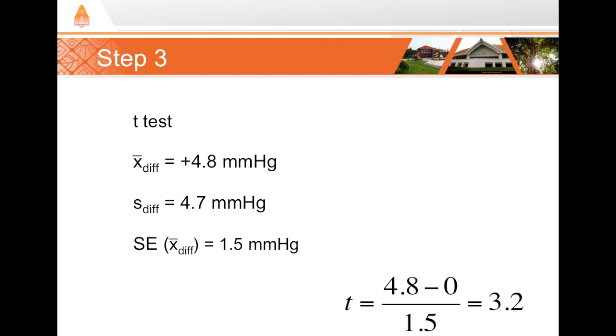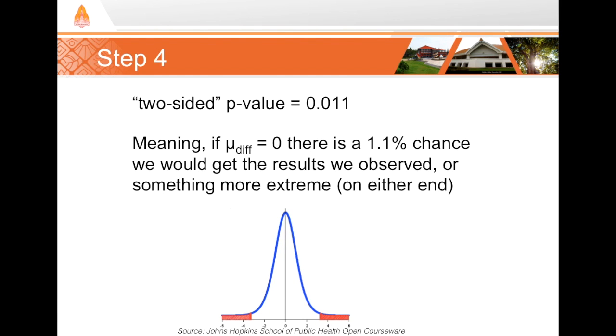Finally, we take that t-statistic and plug those values into our two-sided two-sample dependent t-test, and our statistics program gives us a p-value of 0.011. We can interpret this and say that if the real difference before and after taking this oral contraceptive is a zero increase in blood pressure, then we would expect that there is about a 1.1 percent chance of getting the results that we got, which was an increase of 4.8 millimeters mercury or more extreme on either side, meaning an increase of 4.8 millimeters mercury or more, or a decrease of 4.8 millimeters mercury or more.